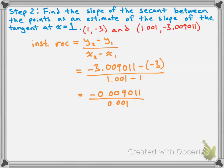Remember how I said to add 0.001 to the initial x value — that should always be the case, so the denominator will always be either 0.001 or -0.001. Dividing these out, we get -9.011 as our result. Because this is an estimate for the instantaneous rate of change and we get -9.011, it's probably safe to say the exact value of the instantaneous rate of change would be -9.